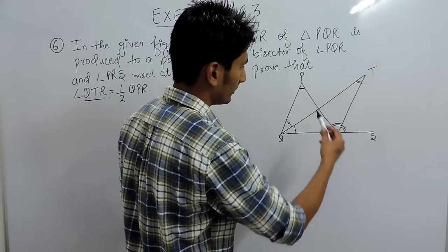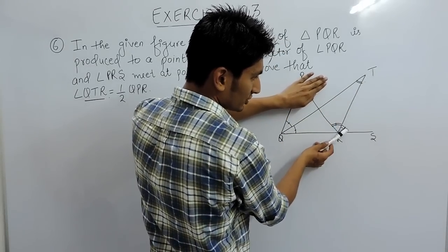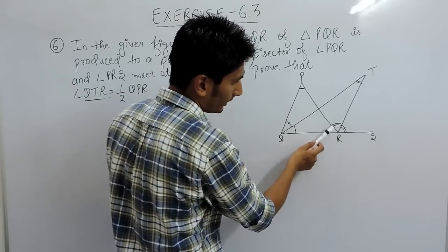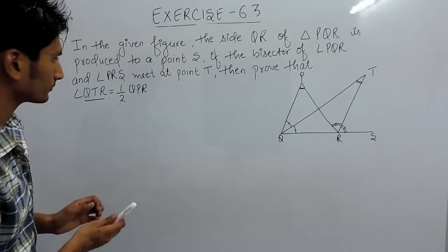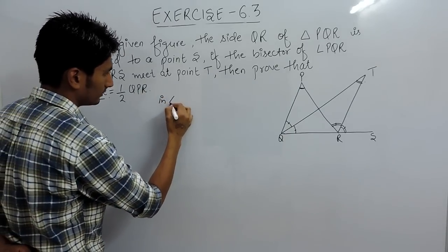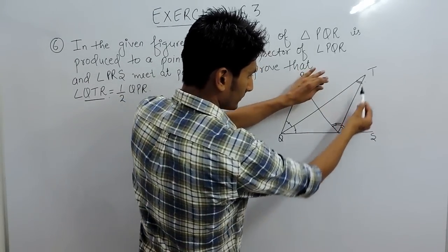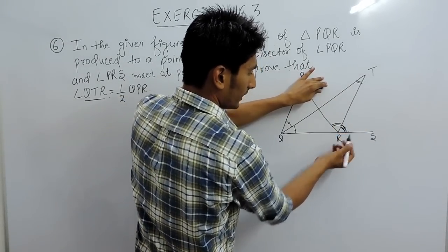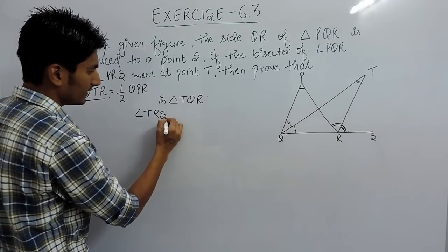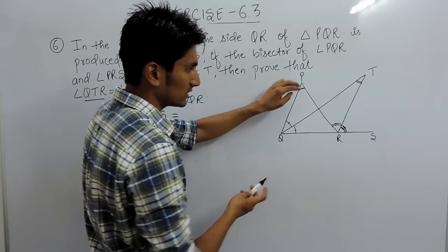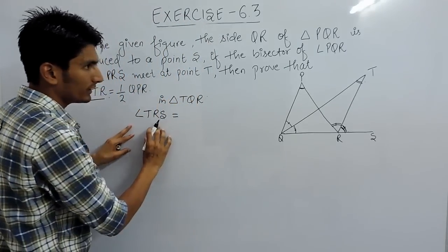In this figure, if we consider triangle TQR, there is an exterior angle. And again in triangle PQR, this is also an exterior angle. So in this question we have to use the property of exterior angles. First of all, in triangle TQR, angle TRS is the exterior angle. We know that in any triangle, the exterior angle is equal to the sum of the interior opposite angles.